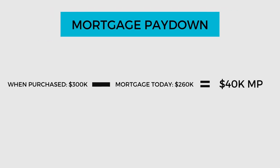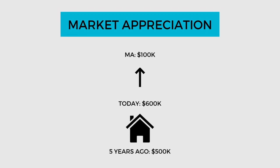For example, if my mortgage was $300,000 when I purchased a property, and five years later the mortgage balance is $260,000, I would have paid down $40,000 on my mortgage. The final category is market appreciation. We calculate this with either a projection if we're forecasting on a property, or we take the actual market value of the property and compare it to what the market value was when we purchased it. For instance, if I purchased a property for $500,000 five years ago and the value is now $600,000, the market appreciation has gone up by $100,000.